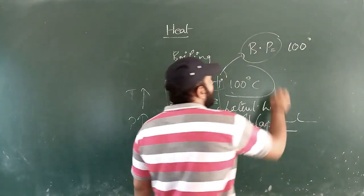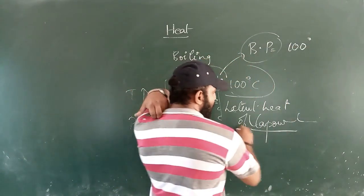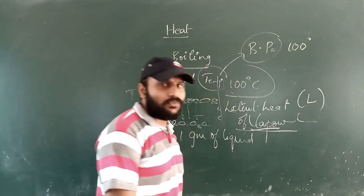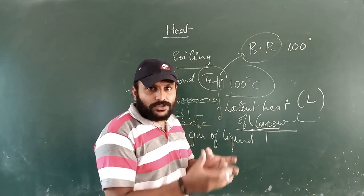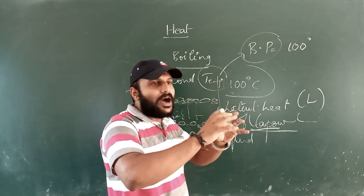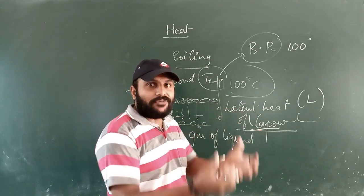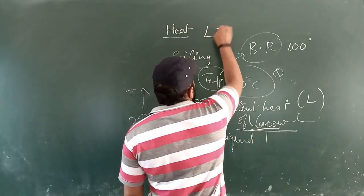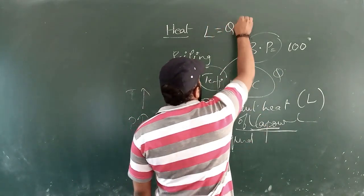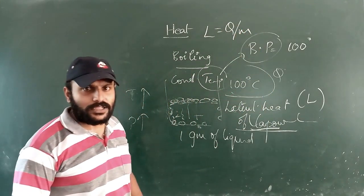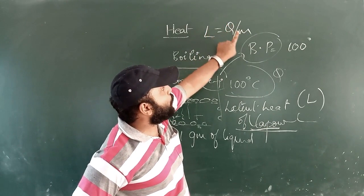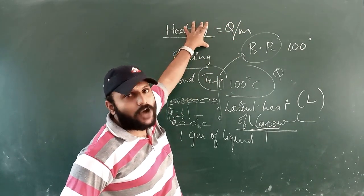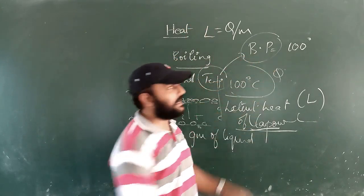Latent heat of vaporization is the amount of heat energy required to change 1 gram of liquid to vapor. The formula is L = Q/M, where Q is the amount of heat energy required to convert a mass M of liquid into vapor. The CGS unit for latent heat of vaporization is calorie per gram, and the SI unit is joule per kilogram.